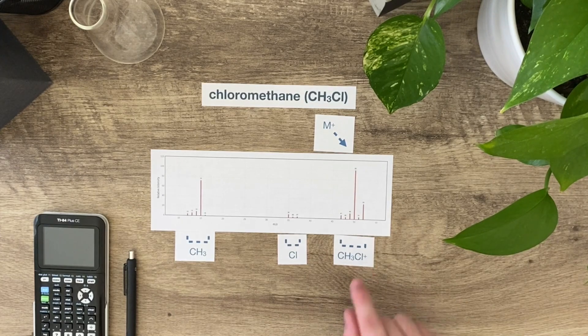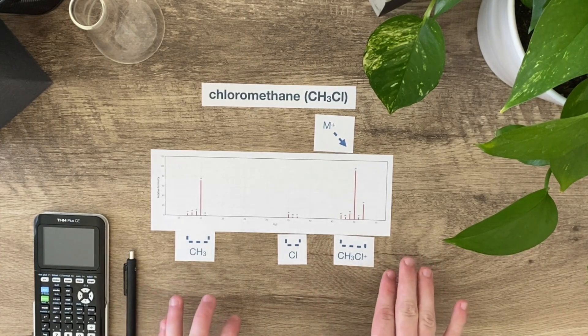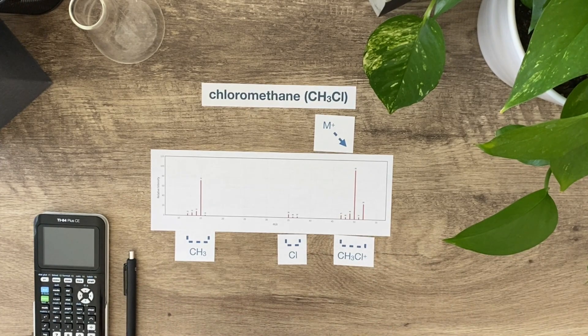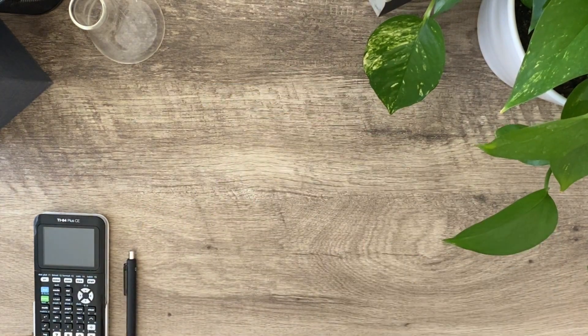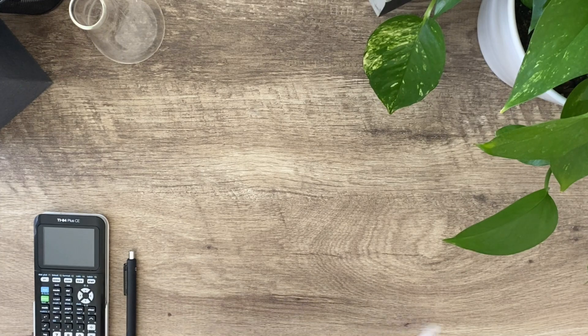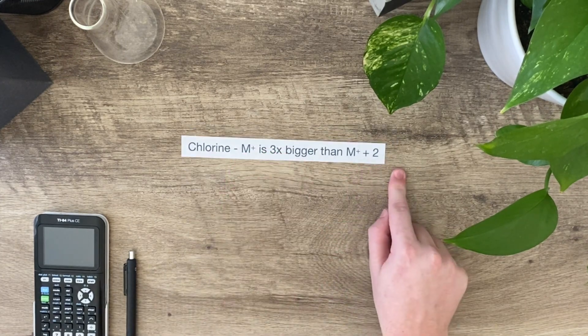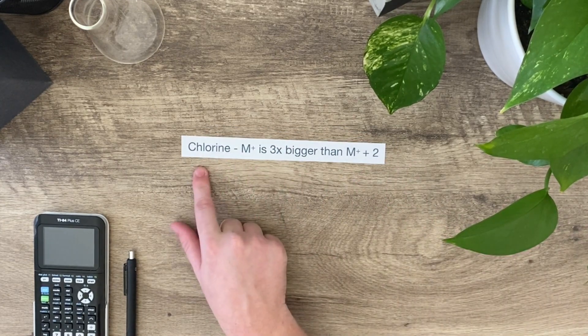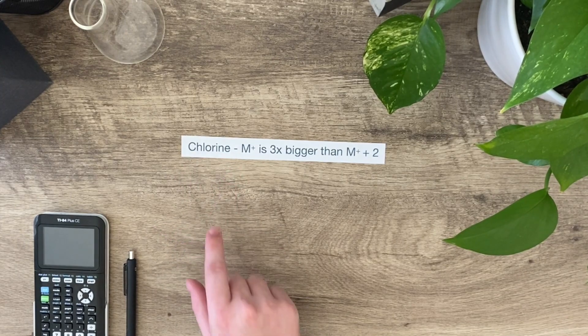There are other shortcuts that we can use when we look at a mass spec to figure out whether a chlorine is present, a bromine is present, or a nitrogen is present. Let's look at them. Chlorine we just went over. If the M+ peak is three times higher than the M+2 peak, meaning two peaks past the M+ peak, three times bigger, a chlorine is present. That's because of that 35-37 relationship.